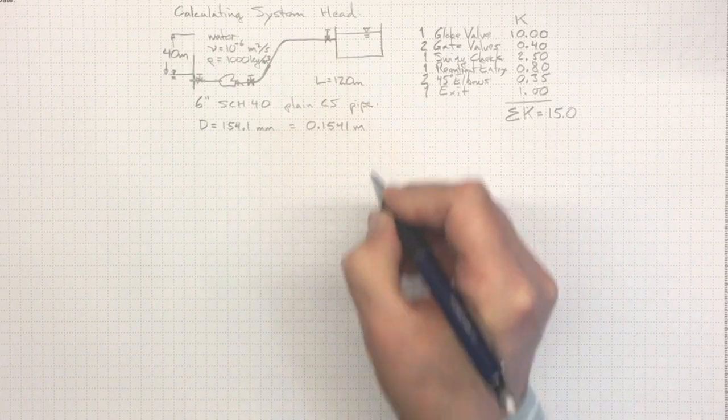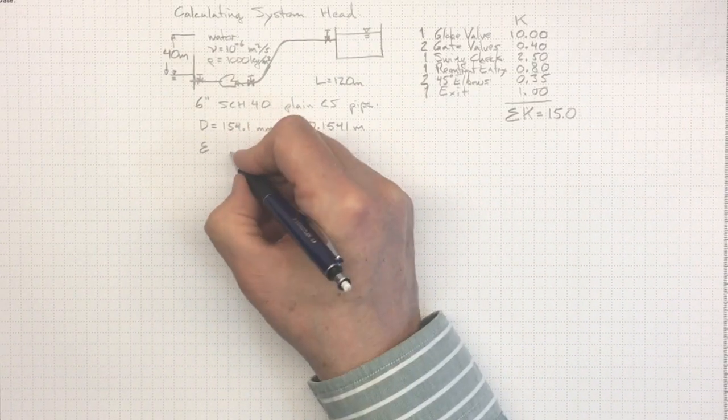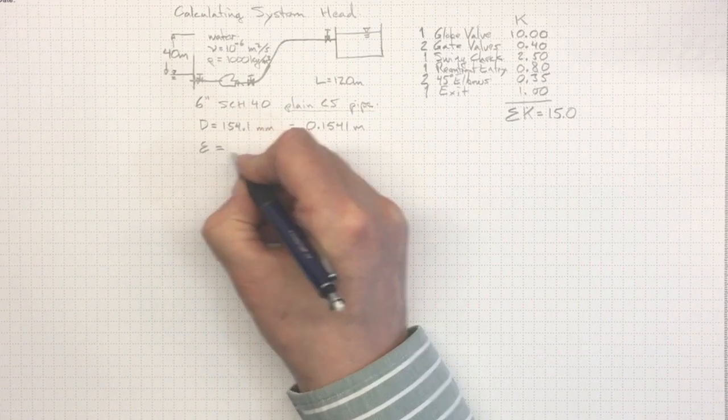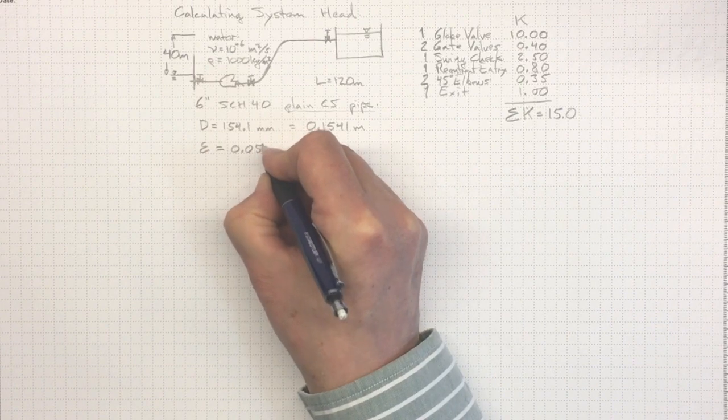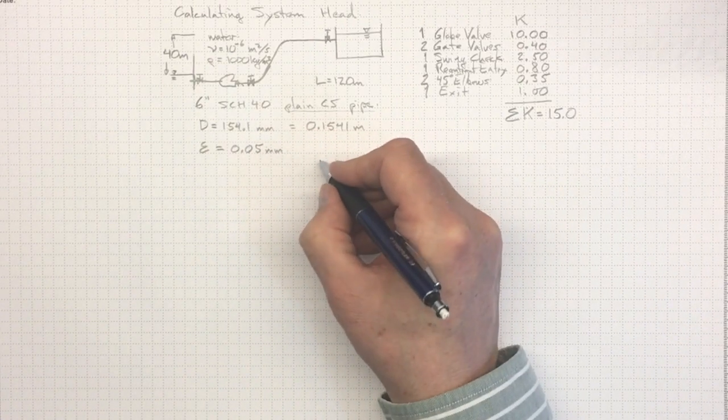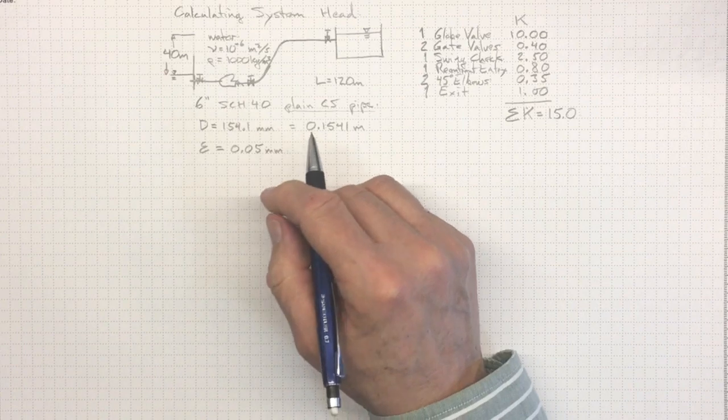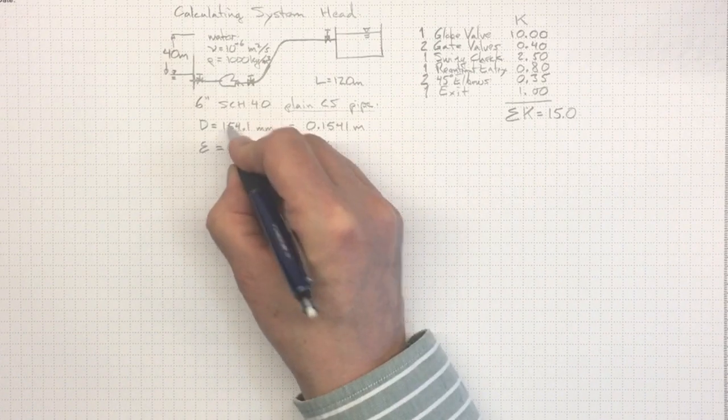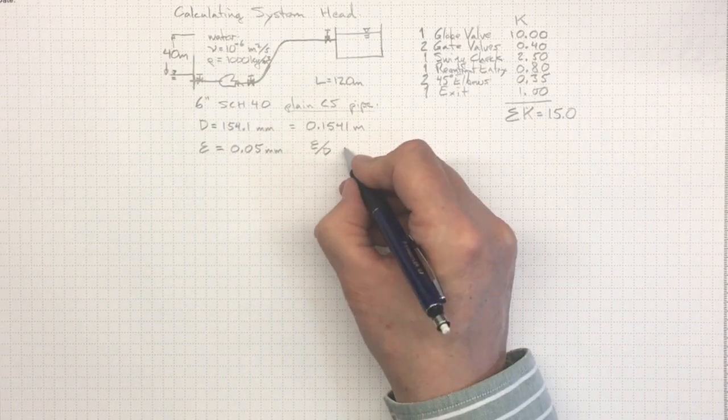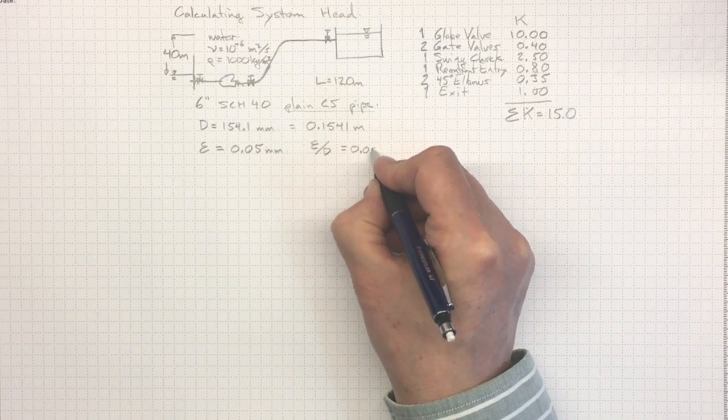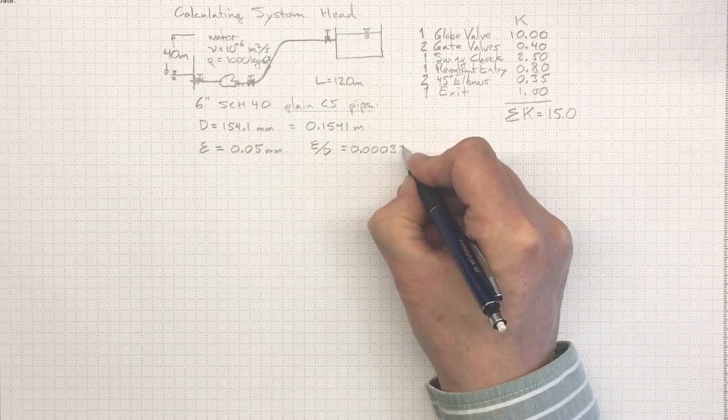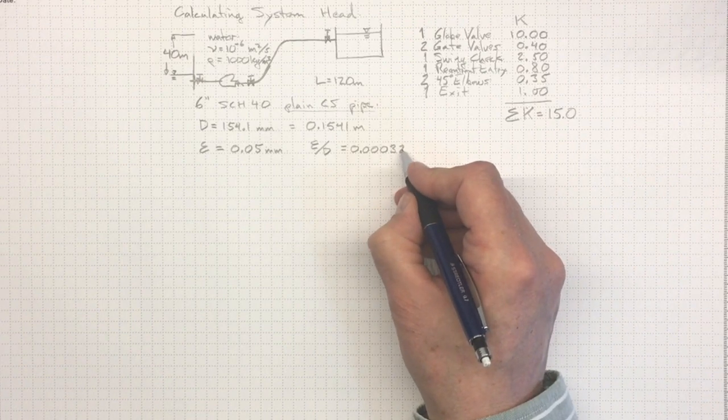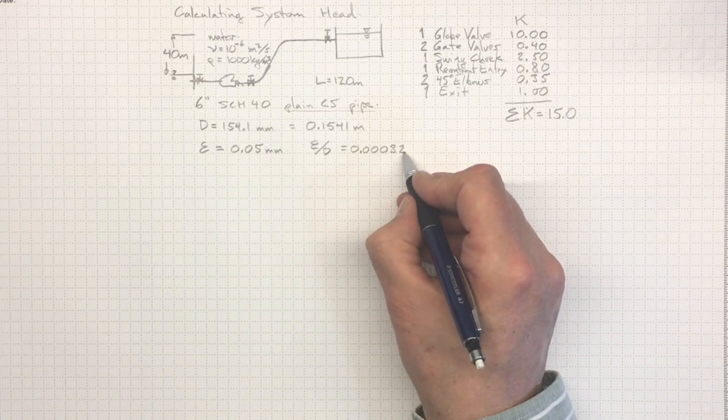The roughness for a plain carbon steel pipe will be something around 0.05 millimeters, so about 1/20th of a millimeter, quite a smooth surface. So, from that, we can get the relative roughness. That is, how big is the roughness compared to the diameter of the pipe. And that will turn out to be 0.00032. So, three parts in 10,000 for the roughness height on the inside of the pipe. So, that's a pretty smooth pipe.